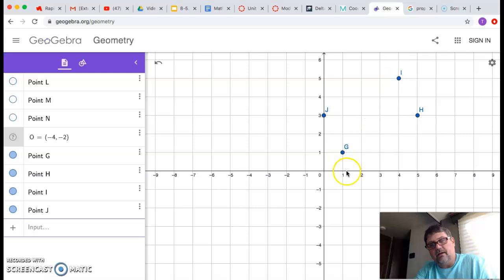Or we could prove that line segment GI is the same as, or congruent, to JH. These are your diagonals, right?